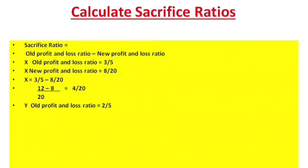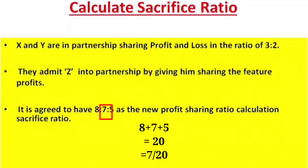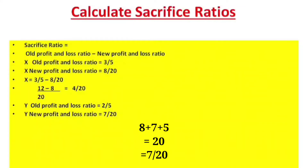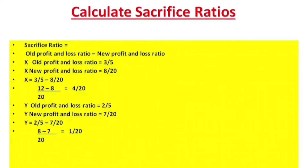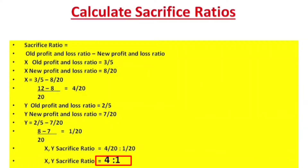Y's old ratio is 2 by 5. Y's new ratio is 7 by 20 — total ratio is 20 for X, Y, Z. So: 2/5 minus 7/20, making the denominator common gives 8/20 minus 7/20, which equals 1 by 20. Therefore X's sacrifice is 4/20 and Y's is 1/20, giving X:Y sacrifice ratio of 4:1.